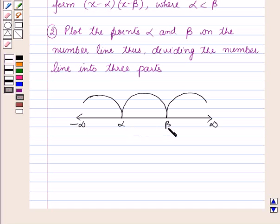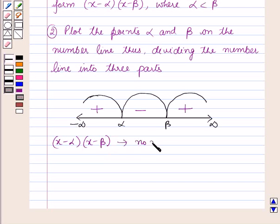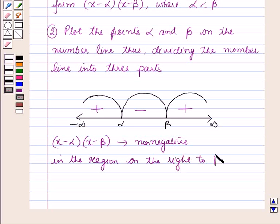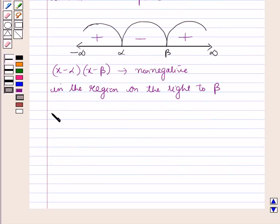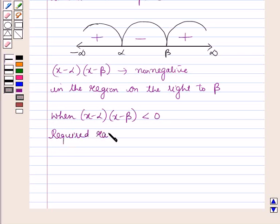After plotting the points alpha and beta on the number line, starting from the rightmost region put the signs plus, minus, and plus. This shows that the expression (x minus alpha) times (x minus beta) is negative in the middle region between alpha and beta. When (x minus alpha)(x minus beta) is less than 0, the required range will be alpha less than x less than beta.